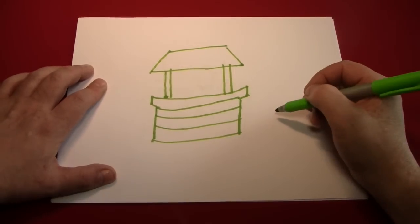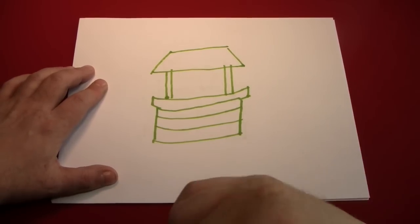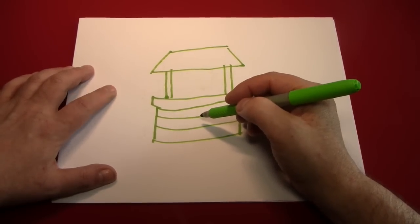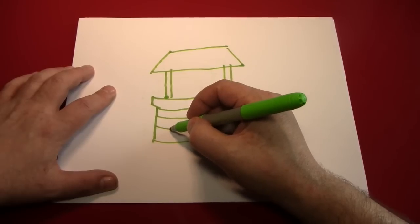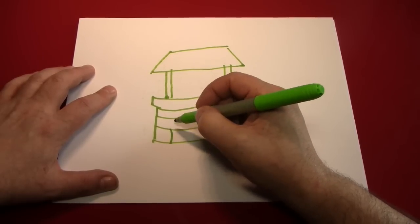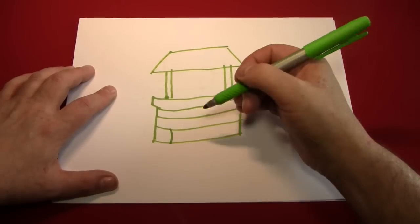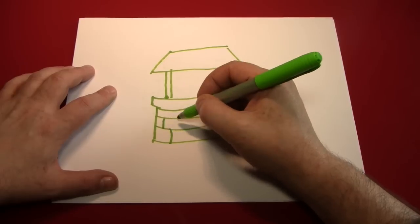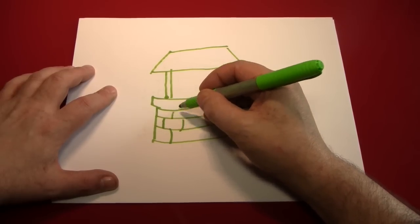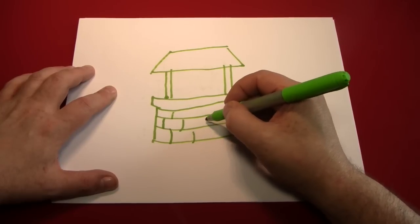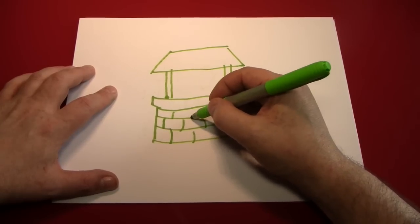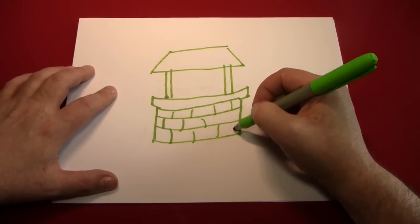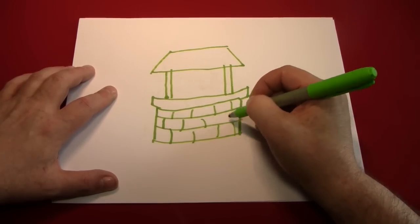Now we can put some details into the stones of the wishing well. If you want to know more about this kind of pattern you can look at how I did a brick wall in an earlier video. I'll put the link down in the description. And stones are a lot like bricks except they're rounder than bricks but you make them the same way in that you kind of stagger them.